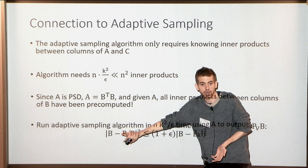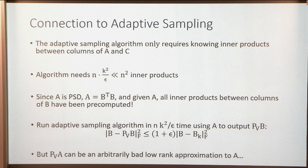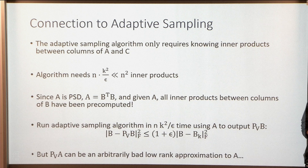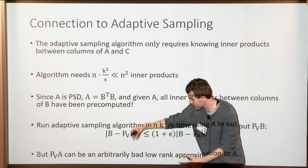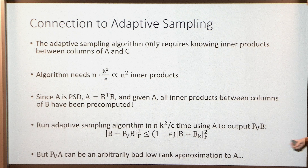This gives a rank-K approximation that is good for B. However, the problem is we wanted a good rank-K approximation to A, not B. Even though B and A have the same singular vectors, the approximation is not error-preserving — using the space found by adaptive sampling on B for approximating A can give an arbitrarily bad approximation. You'd have to make ε very small as a function of the spectrum of A. So we need a different approach.